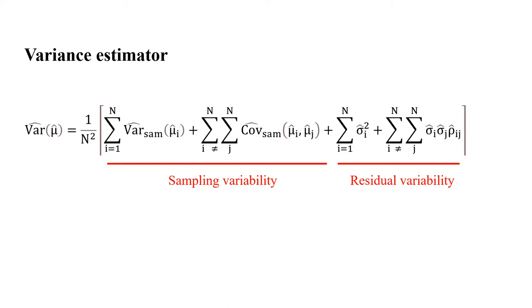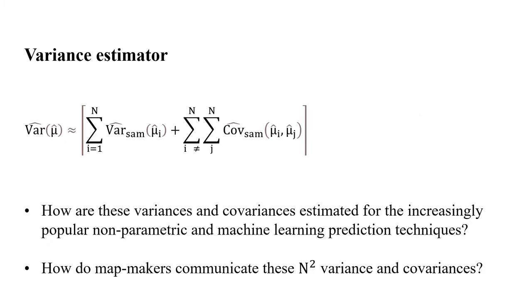It turns out that the latter two terms almost always are negligible relative to the first two terms, so the first two terms are what we need to concentrate on. We can estimate the variance using just the sampling variability components. The question is how do we estimate these variances and covariances for nonparametric and machine learning prediction techniques? If we were using a regression prediction technique, there are neat formulas available, but not so with these other techniques.